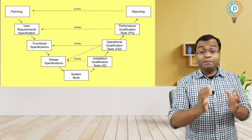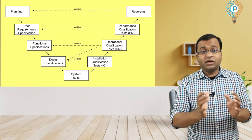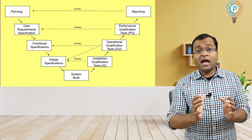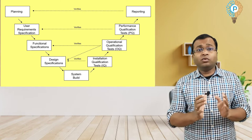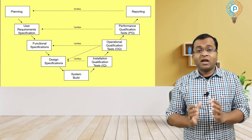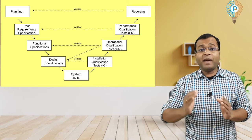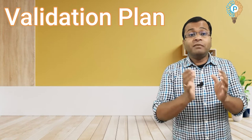This is the picture of the V-diagram. Validation activity follows the diagram beginning at the top left, that is the planning, proceeding down the V shape to system build, and then back to the top right, ending at reporting. Let's break down each part a little bit further, starting with planning. First is the Validation Plan.